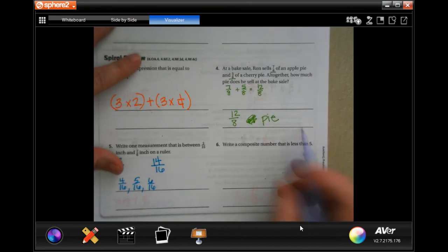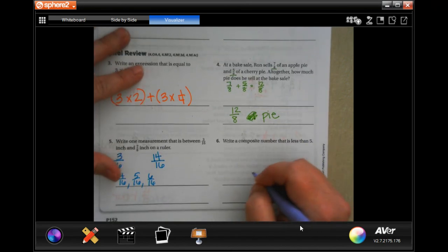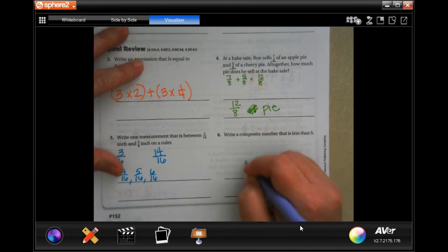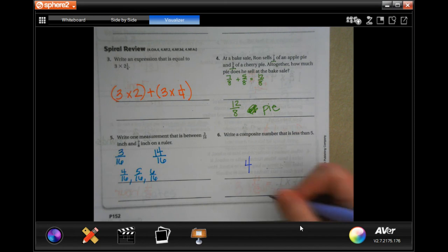Write a composite number that is less than five. Well, composite number is just a number that can be multiplied to be gotten to. So, let's go four.